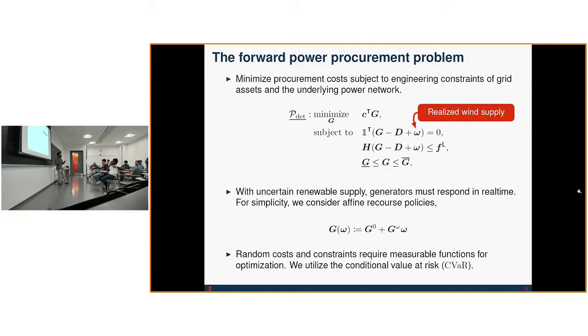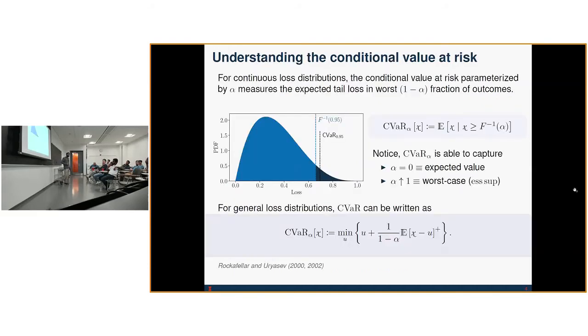Now what we suggest using is the conditional value at risk. What is the conditional value at risk? The conditional value at risk, parameterized by some alpha, measures the expected tail loss in the one minus alpha fraction of worst case scenarios. So if we have a random variable with some distribution given here,